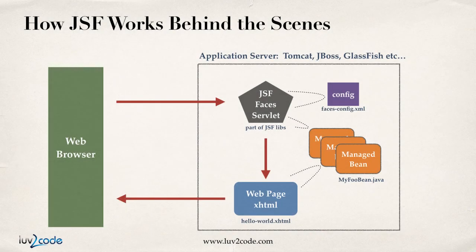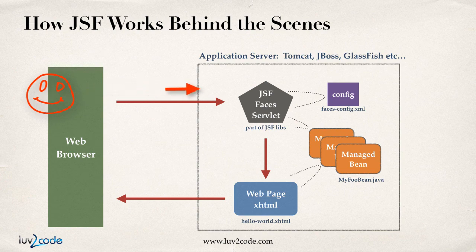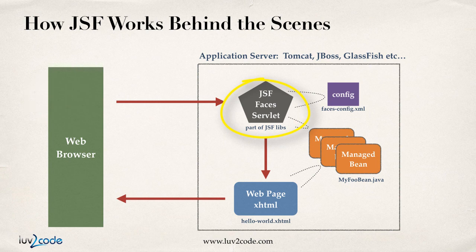So how does JSF work behind the scenes? We have a user in their browser — they'll submit a request to our application server. This will come into our JSF faces servlet. This faces servlet is part of the JSF library; you, the developer, don't have to write this servlet — it's given to you. This faces servlet handles routing the request to the appropriate pages. In the background, it can read information from the faces-config file.